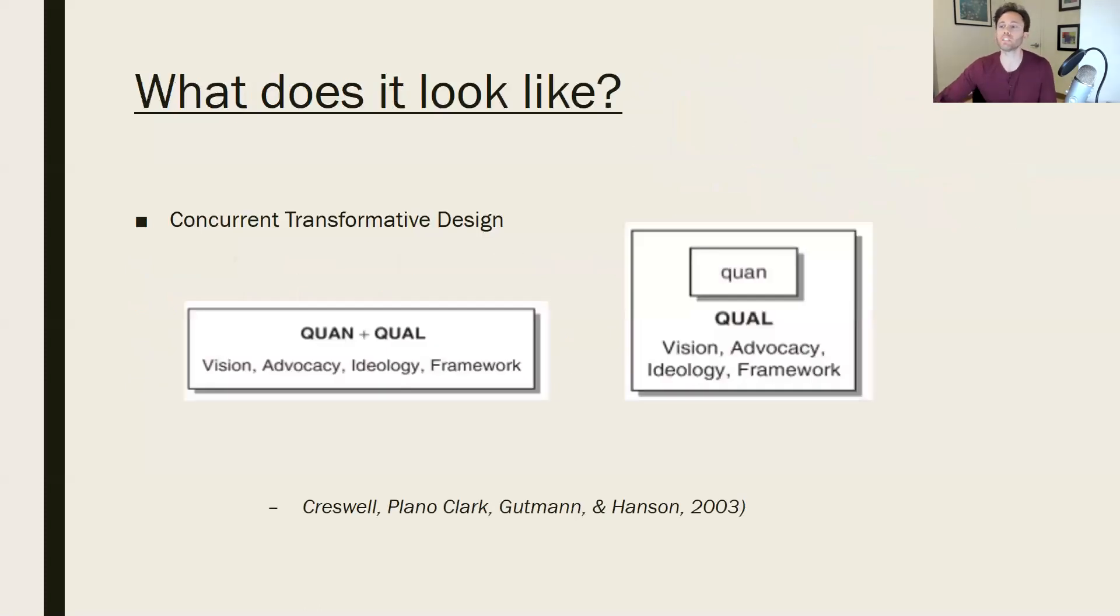So what does it look like? Here are two options. We have an intermixed quantitative and qualitative where both are capitalized, meaning they're given equal priority. This goes all the way across from the initial vision to advocacy and even the framework itself of the methods. A secondary option is where you might have one of the two methods of research collection, in this case qualitative, that's going to be the overarching area, and then within that is an assumed quantitative element.